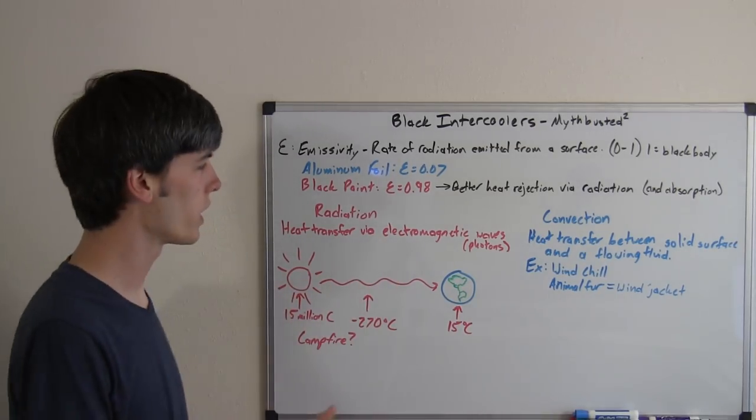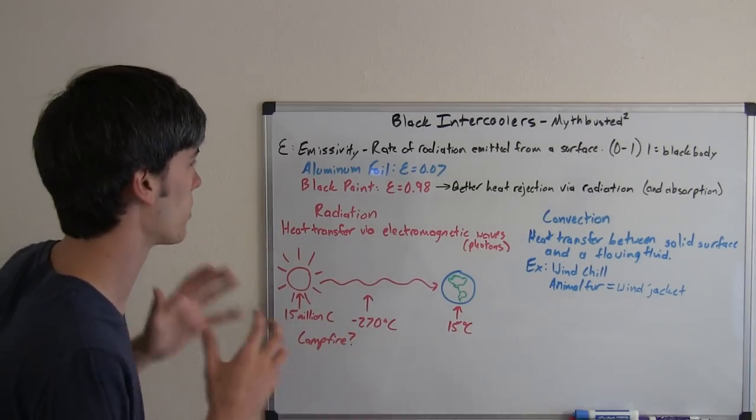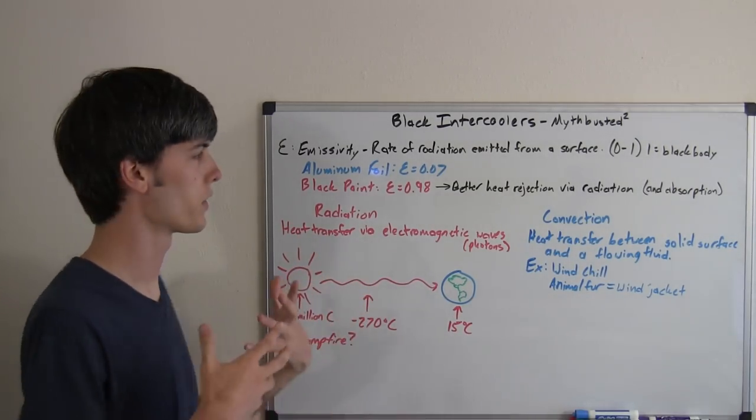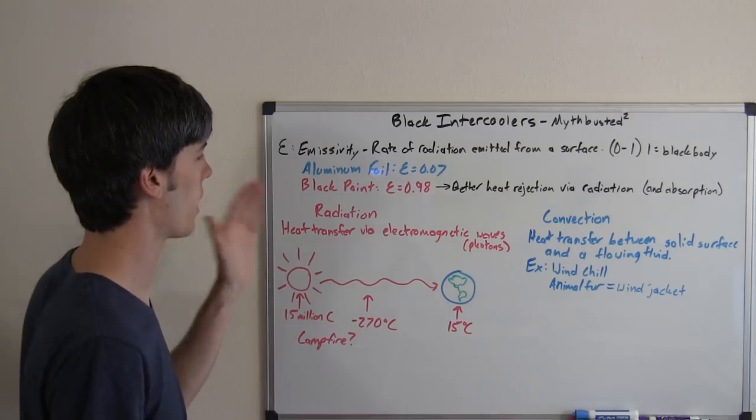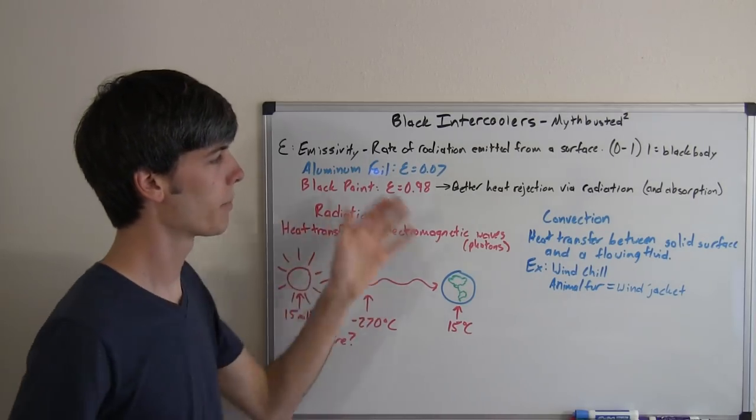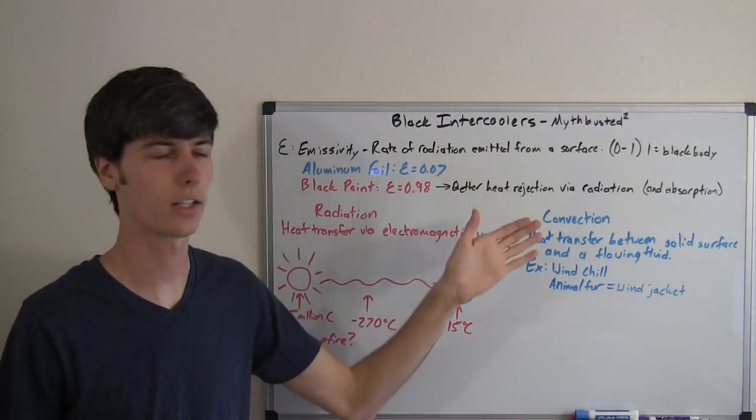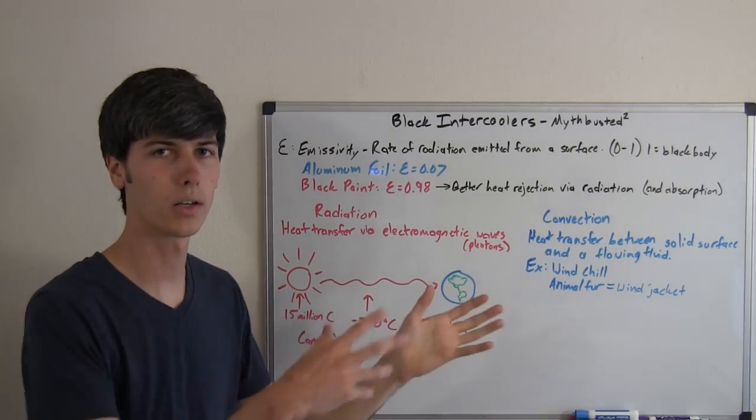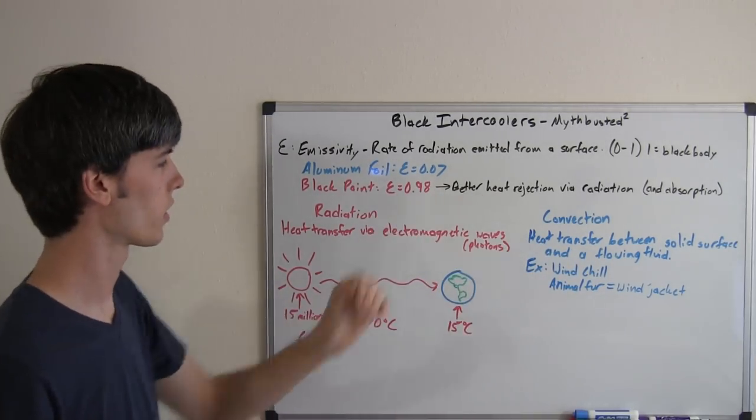So let's talk about radiation versus convection. And this is where the problem lies. An intercooler is rejecting heat via convection. It's not doing it by radiation. It is somewhat, but it's designed to reject heat via convection. Air moves through the intercooler. That pulls out the heat. That's convection.